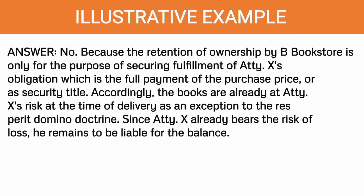No, Attorney X is not correct. While it is true that as a general rule we follow the res perit domino doctrine — the thing perishes with the owner — and technically B Bookstore is still the owner because of the retention of ownership, take note that the retention of ownership here is only for the purpose of securing full payment on the part of Attorney X. This means the title retained by B Bookstore is only a security title. Since the books are already delivered, they will still be at the buyer's risk of loss despite the security title that exists on the part of the seller, as an exception to the res perit domino doctrine. Since Attorney X already bears the risk of loss because of the delivery, he remains liable for the balance.